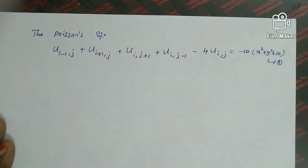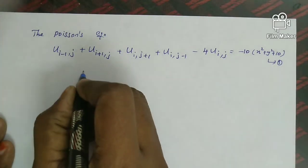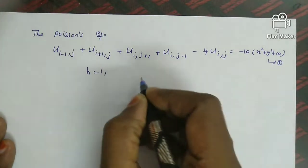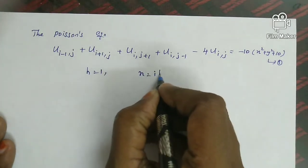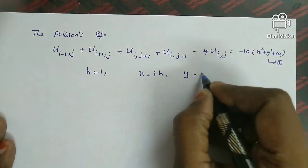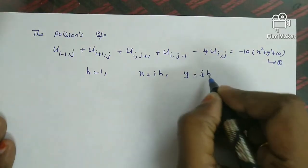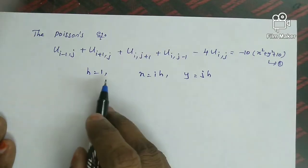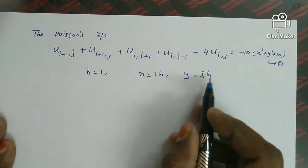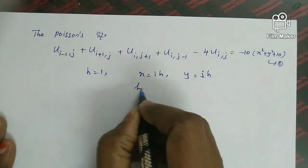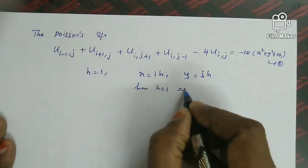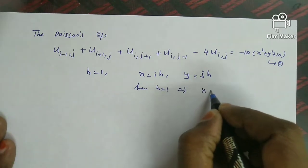In this problem, n equals u and the mesh length h equals 1. Looking at the formula, the right-hand side function F(ih, jh) means x equals ih and y equals jh. Since h equals 1, x equals i and y equals j.